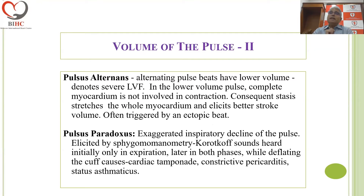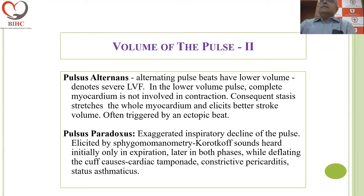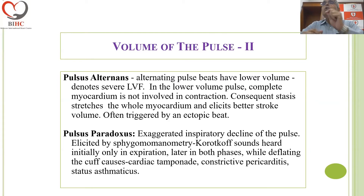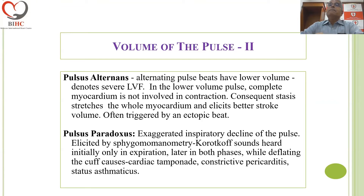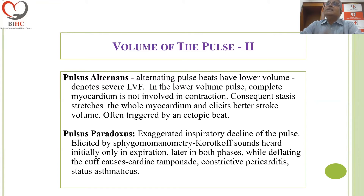Two specific abnormalities of the pulse are worth discussing: pulsus alternans and pulsus paradoxus. In pulsus alternans, alternating pulse beats have a lower volume, denoting severe left ventricular failure — in the lower volume pulse, not all myocardium is involved in contraction, often triggered by an ectopic beat. Pulsus paradoxus is an exaggerated inspiratory decline of the pulse, elicited by sphygmomanometry. As you lower the pressure after inflating the cuff, the Korotkoff sounds are heard initially only on expiration and later in both phases. This is a feature of cardiac tamponade or constrictive pericarditis, and can also occur in status asthmaticus.